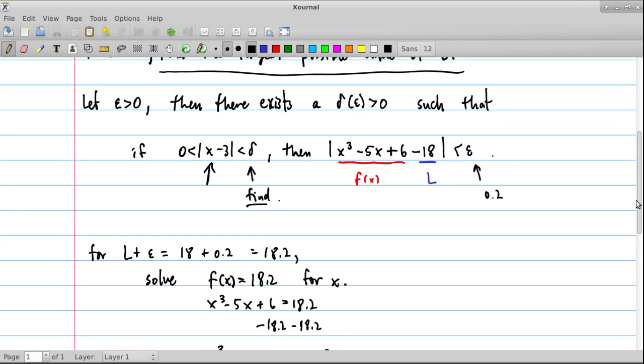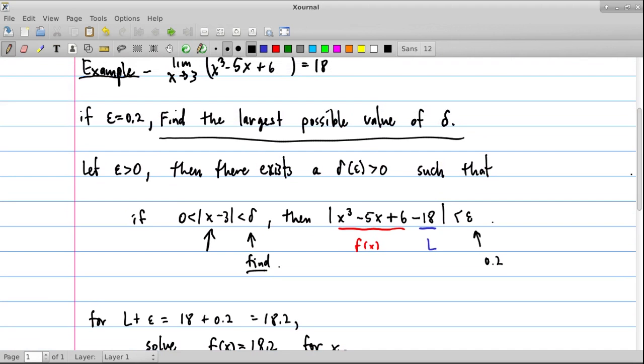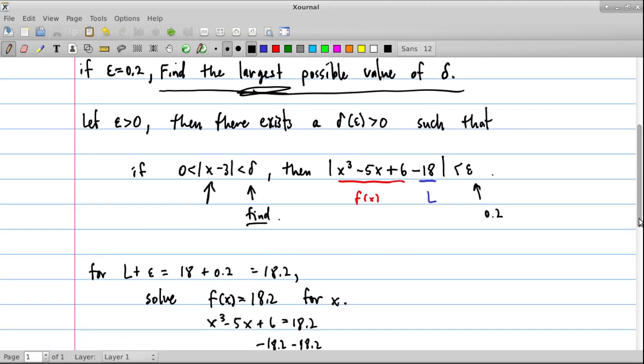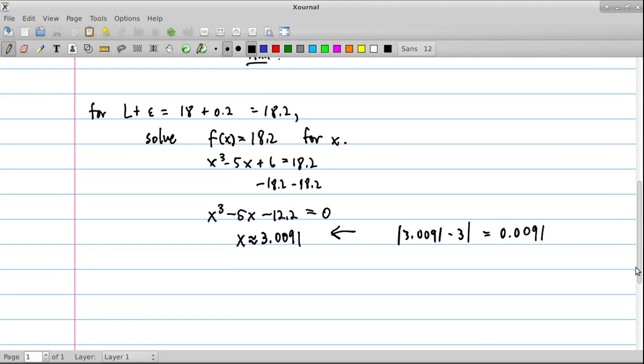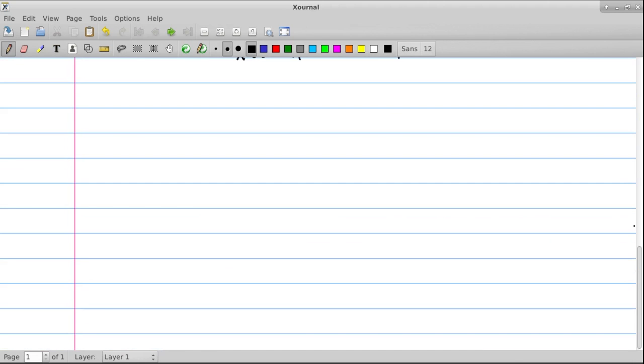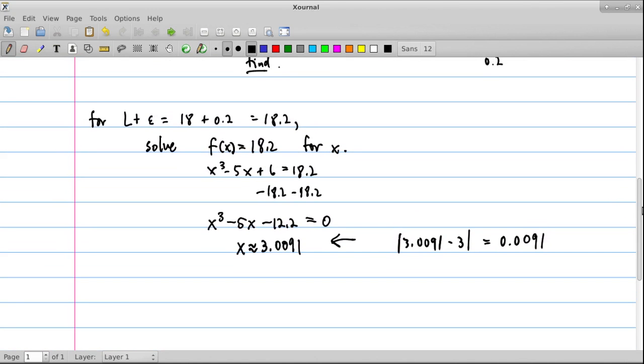Our job is to find the largest possible delta, the largest possible value for delta. And so it's possible that this is it. It's possible that maybe it's not.